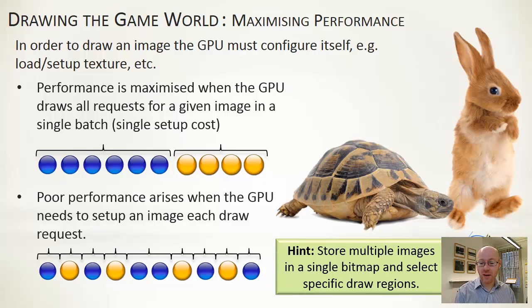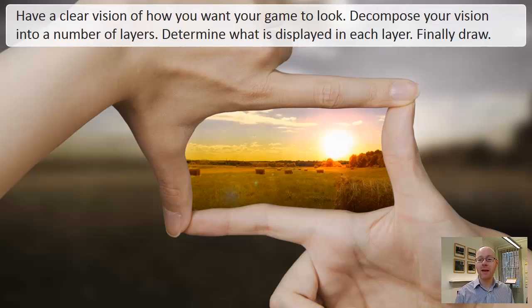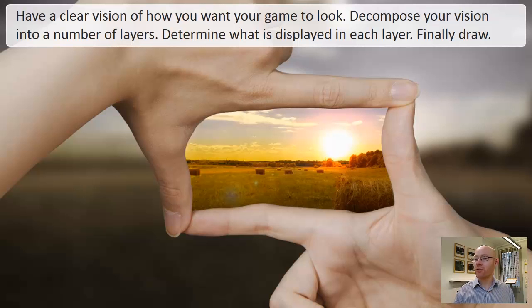A way of getting around the batching problem is that if you have multiple images — say, animation frames — you can store them in the same sprite sheet. That keeps several images notionally part of the same bitmap; you're just drawing different sections from it. As a summary, one of the key things is to have a clear vision of how you want your game to look. You can then decompose that vision into different layers, think about how to build and draw each layer, and split the problem down to the stage where you can eventually draw a particular layer.